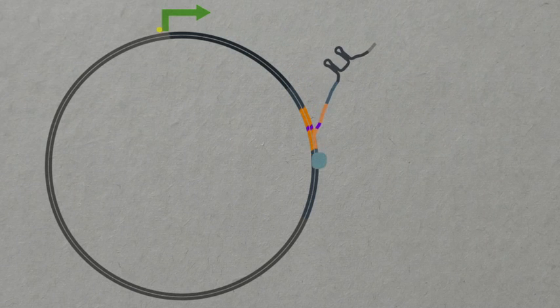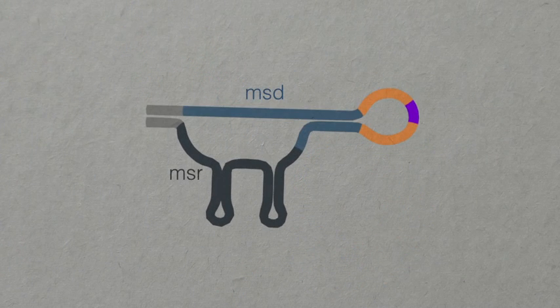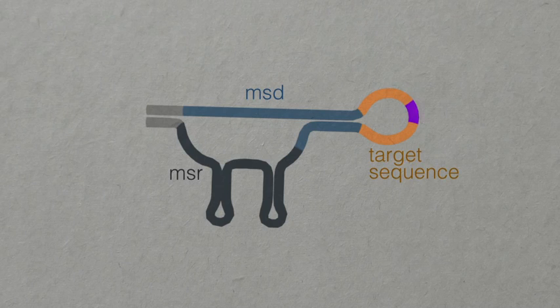The mRNA includes MSR and MSD segments which fold into a characteristic shape. A specific sequence, in this case encoding a point mutation, can be engineered inside the loop of the MSD segment.